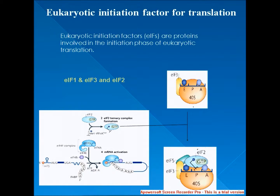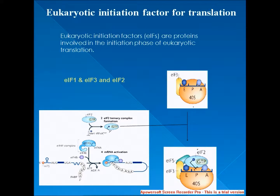EIF2 is a GTP-binding protein responsible for bridging the initiator tRNA to the P-site of the pre-initiation complex. It has specificity for the methionine-charged initiator tRNA, which is distinct from other methionine-charged tRNAs specific for elongation of the polypeptide chain. Once it has placed the initiator tRNA on the AUG start codon in the P-site, it hydrolyzes GTP into GDP and dissociates. This hydrolysis also signals for the dissociation of EIF3, EIF1, and EIF1A and allows the large subunit to bind, signaling the beginning of elongation.